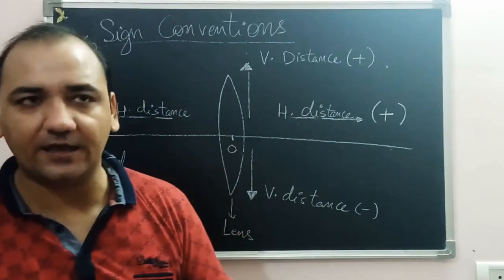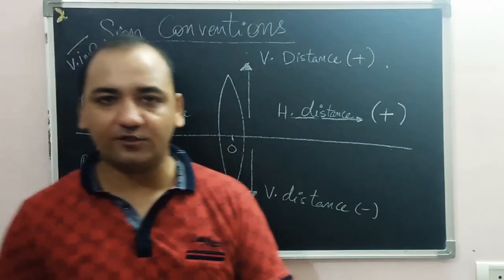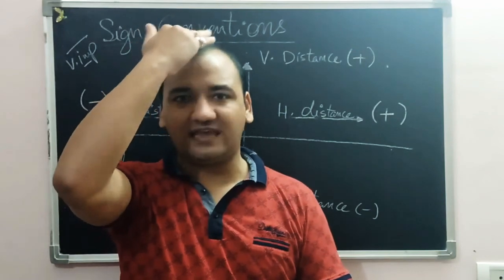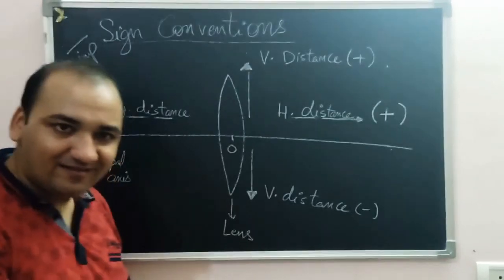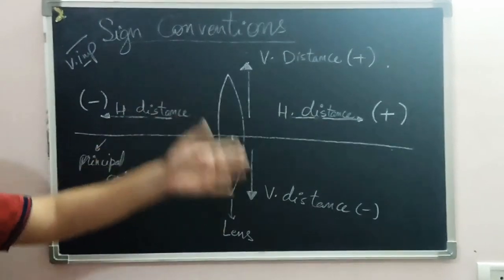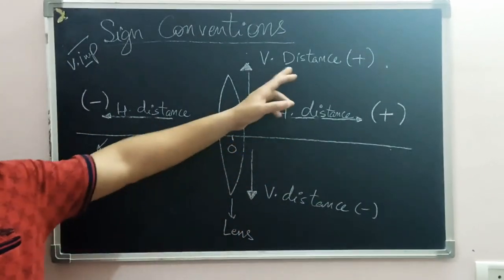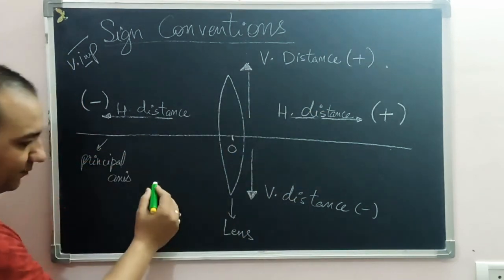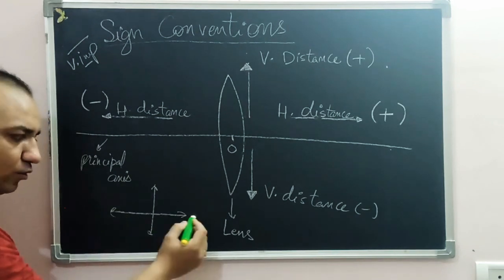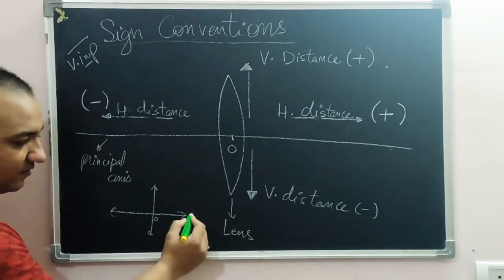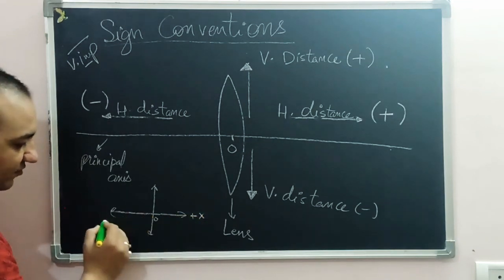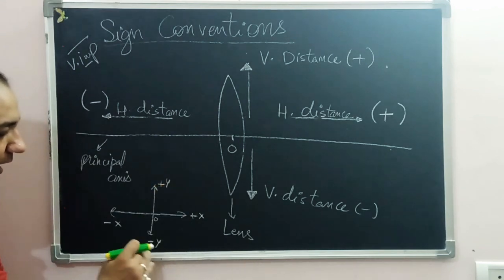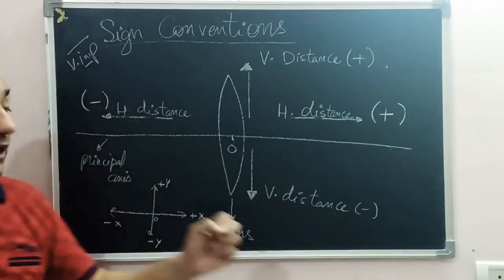To visualize this, think of a coordinate plane: the optical center is the origin, right is positive x, left is negative x, above is positive y, and below is negative y. This is exactly like the standard coordinate geometry plane that we study in mathematics.